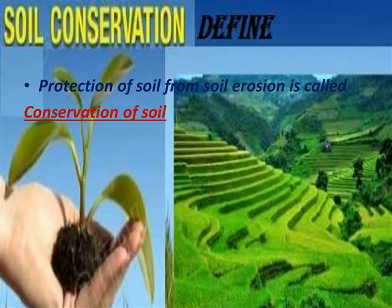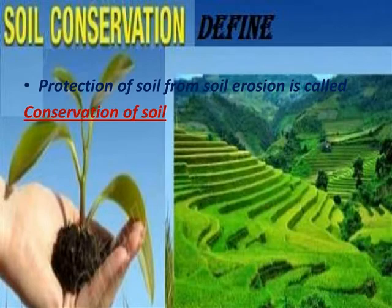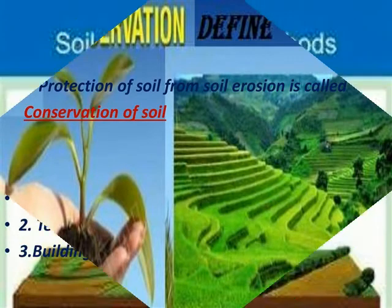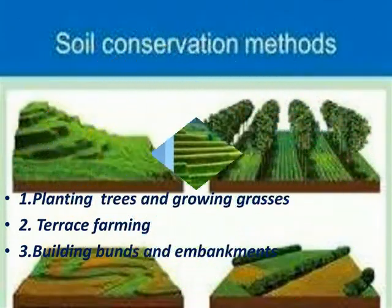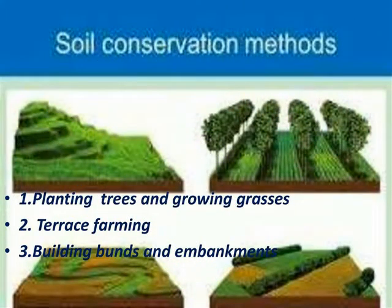Question 4: Mention the methods of soil conservation. Soil conservation can be done by the following methods: planting trees and growing grasses, terrace farming, and building bunds and embankments.